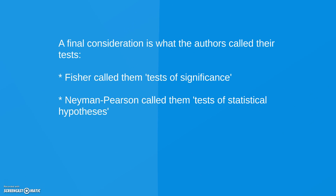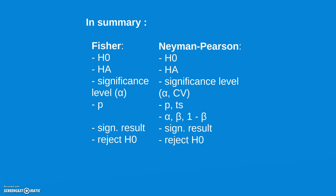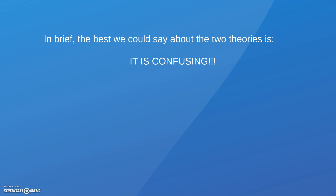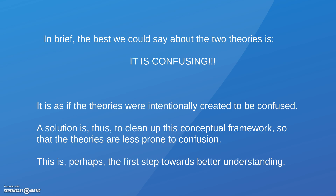Another thing to consider is how the authors name their tests: Fisher called them tests of significance, while Neyman-Pearson called them tests of statistical hypotheses. This is a summary of how the concepts actually look very similar — null hypothesis, other hypotheses, etc. — but we know they are different theories, and those concepts have different functions, so using the same concepts creates quite a lot of confusion.